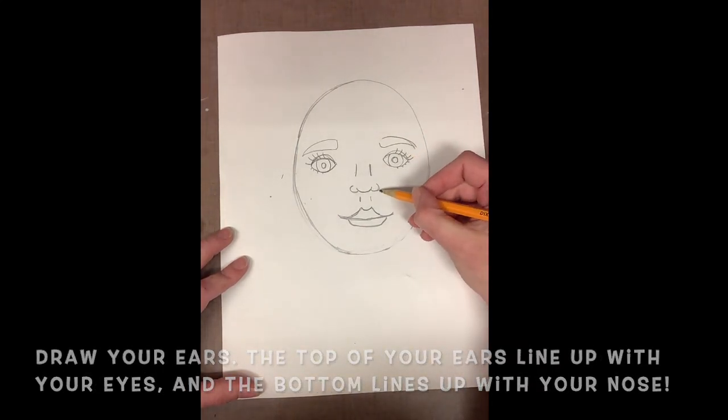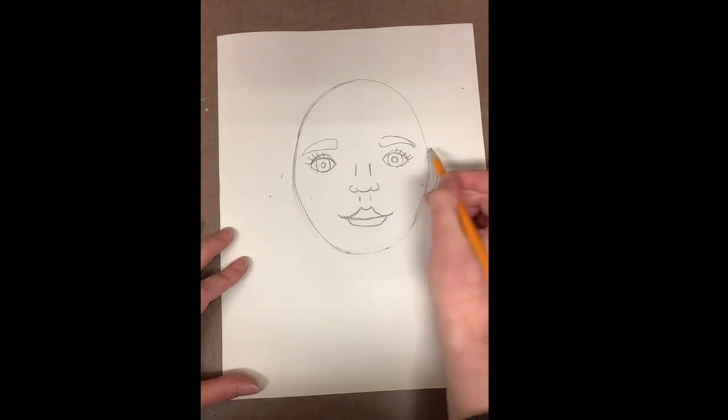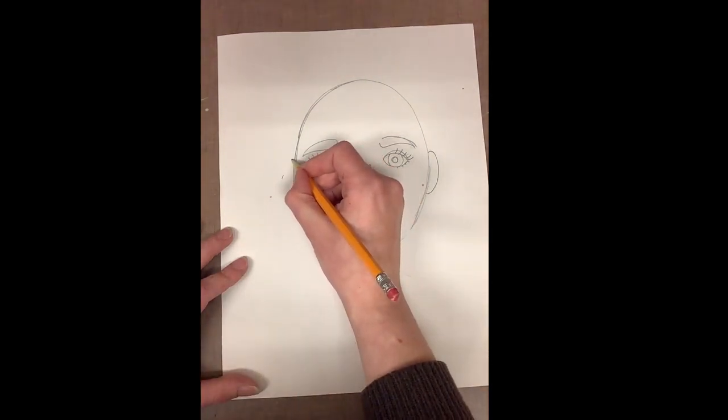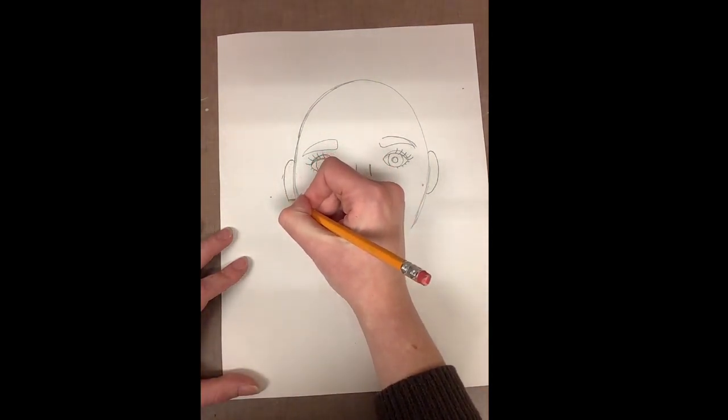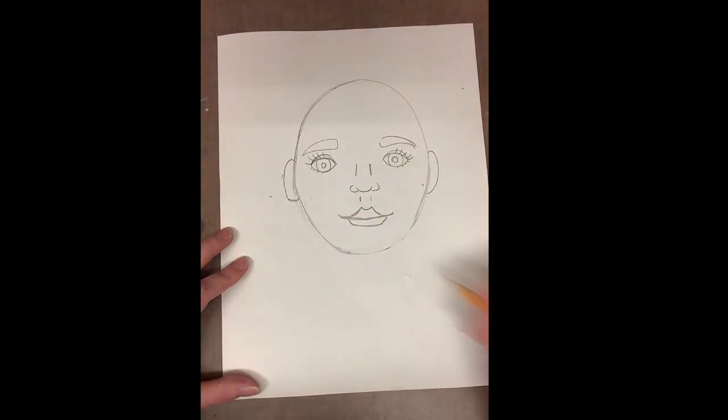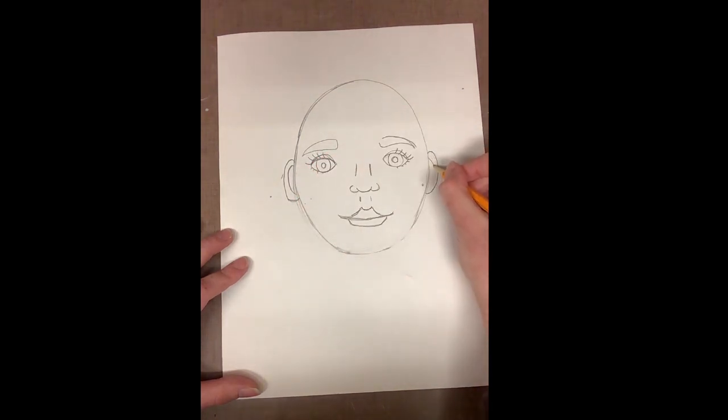Now I can draw my ears. With my ears, they begin in line with my eyes and then end in line with my nose. The inside of the ear is just an echo line or a mirror of the outside of the ear.